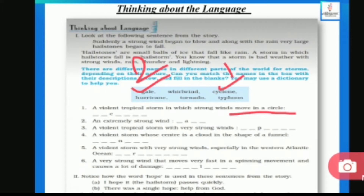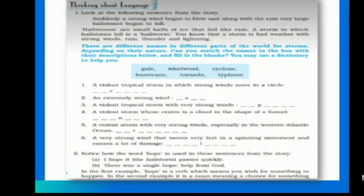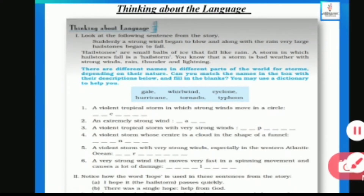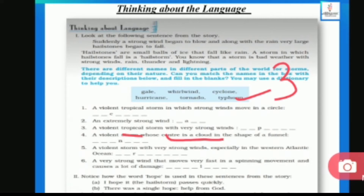So first and second are clear. Third: a violent tropical storm with a very strong wind — jab tropical storm aata hai to usko hum typhoon bolte hain. Fourth: a violent storm whose center is a cloud in the shape of a funnel — jiska center funnel ki tarah ho — usko tornado bolte hain.